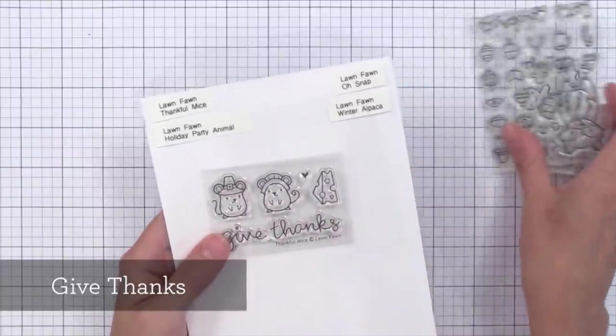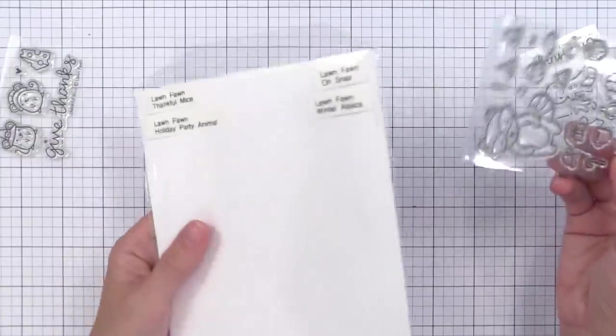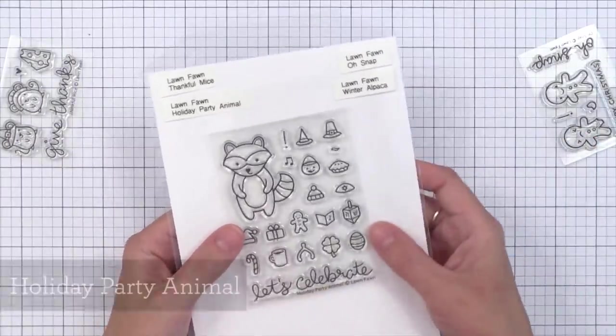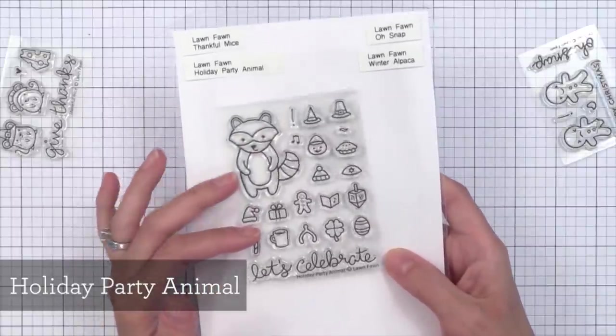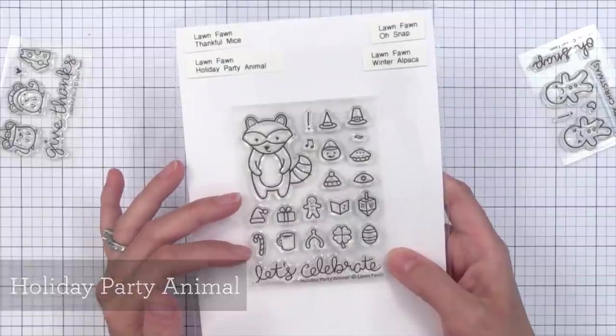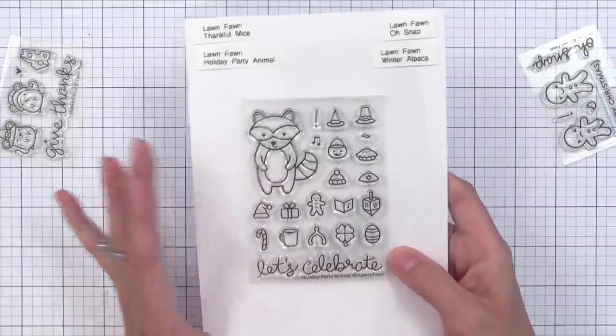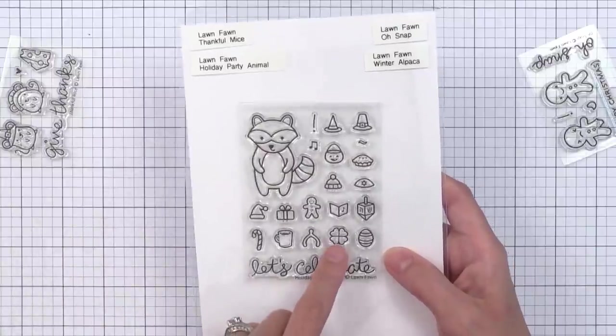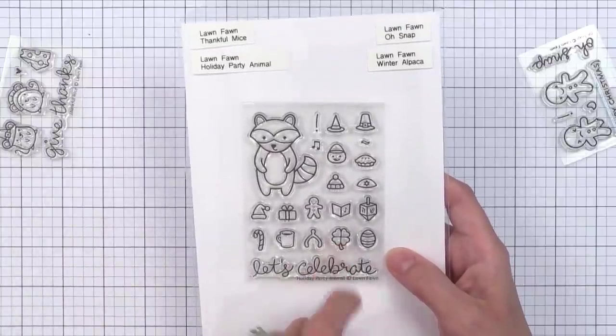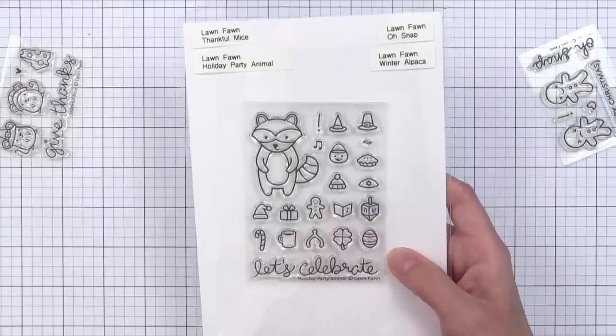Then we have the Holiday Party Animal stamp set. Now these little animals are very popular from Lawn Fawn and check out all the tiny little images you can have him holding. You can have him hold everything from a candy cane to a shamrock to a little pumpkin basket or even a little pie. So this is one of those stamp sets that you can use all year round for lots of different occasions.